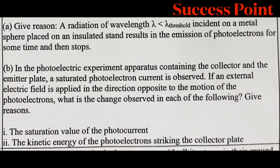In the photoelectric experiment apparatus containing the collector and the emitter plates, a saturated photoelectron current is observed. If an external electric field is applied in the direction opposite to the motion of the photoelectrons, what is the change observed in: first, the saturation value of photocurrent; second, the kinetic energy of the photoelectrons striking the collector plate?